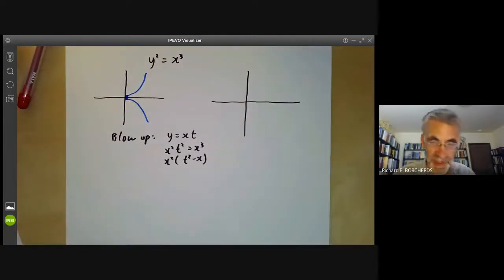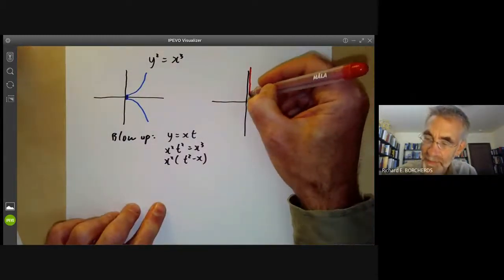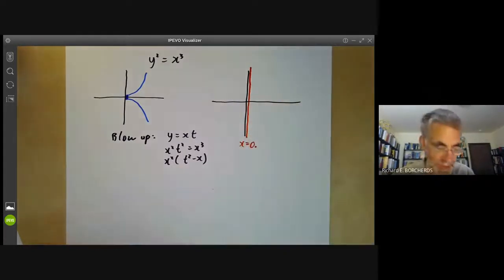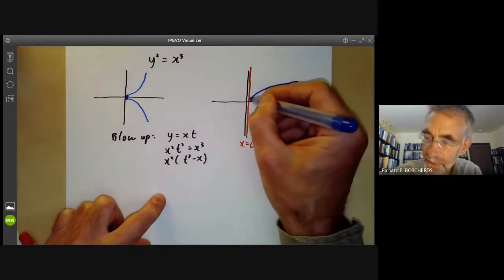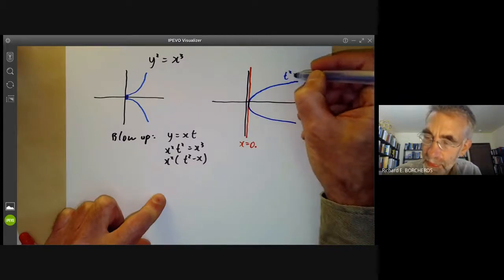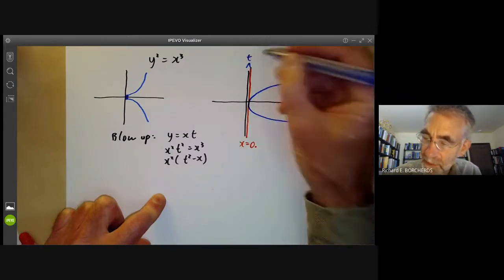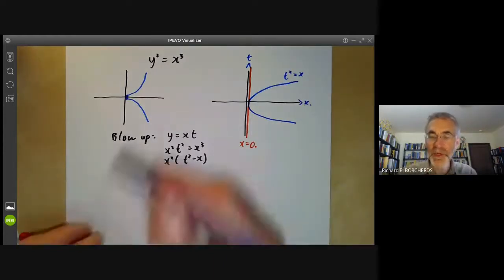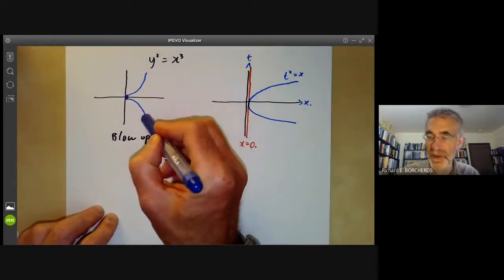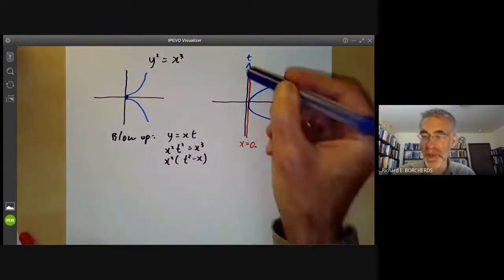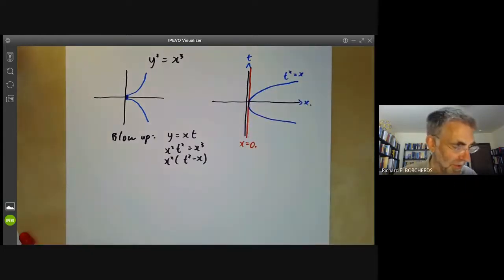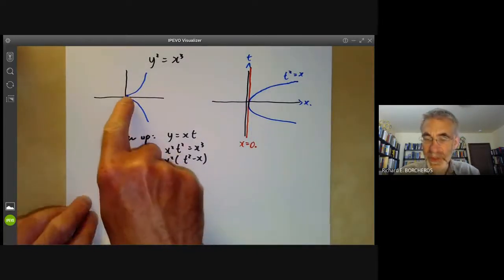This gives us two components: first we've got the exceptional curve x = 0, and we've also got the curve t² = x. So our original curve with the singularity at the origin has been transformed into a nice parabola without any singular points, and we've picked up this extra exceptional curve. Blowing up has resolved this singular point.